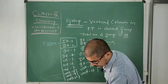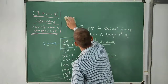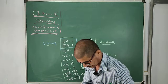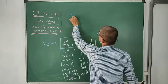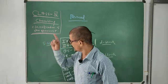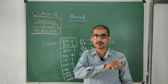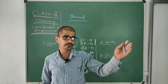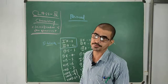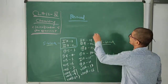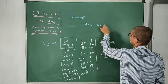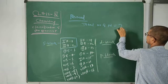Now, moving towards period. In the case of a period, a vertical column is called a group, and a horizontal row — which goes left to right — in the modern periodic table is called a period. The total number of periods is 7.